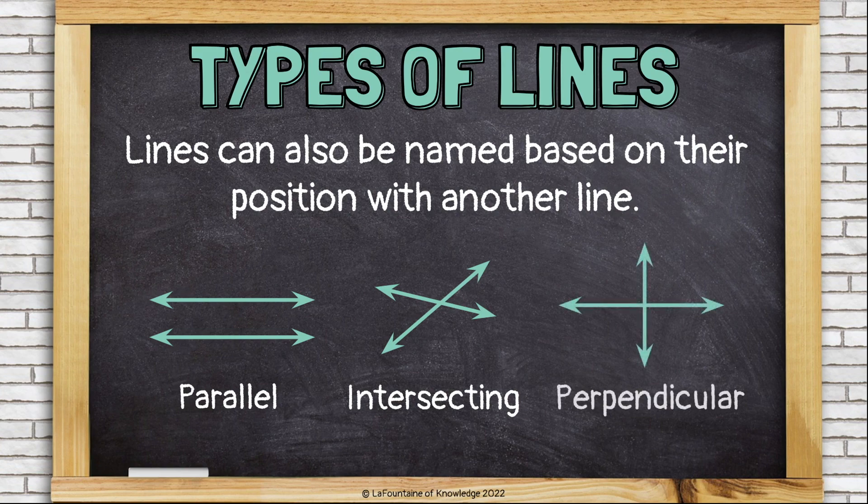Sometimes lines are perpendicular. Perpendicular lines are intersecting lines because they cross. But when they do, they form right angles or square corners.